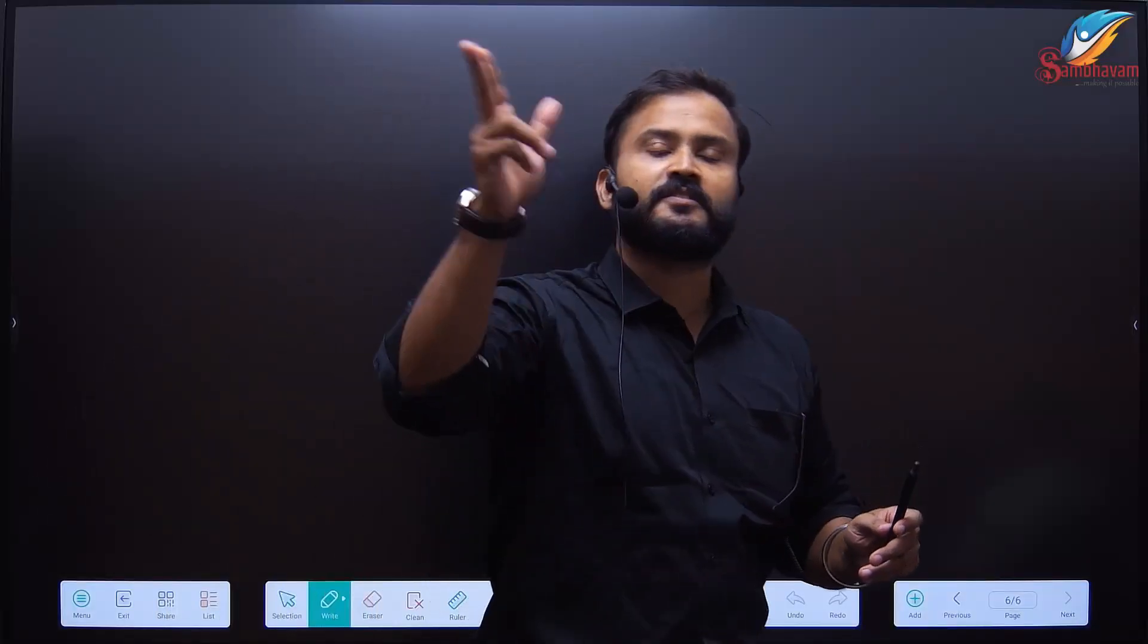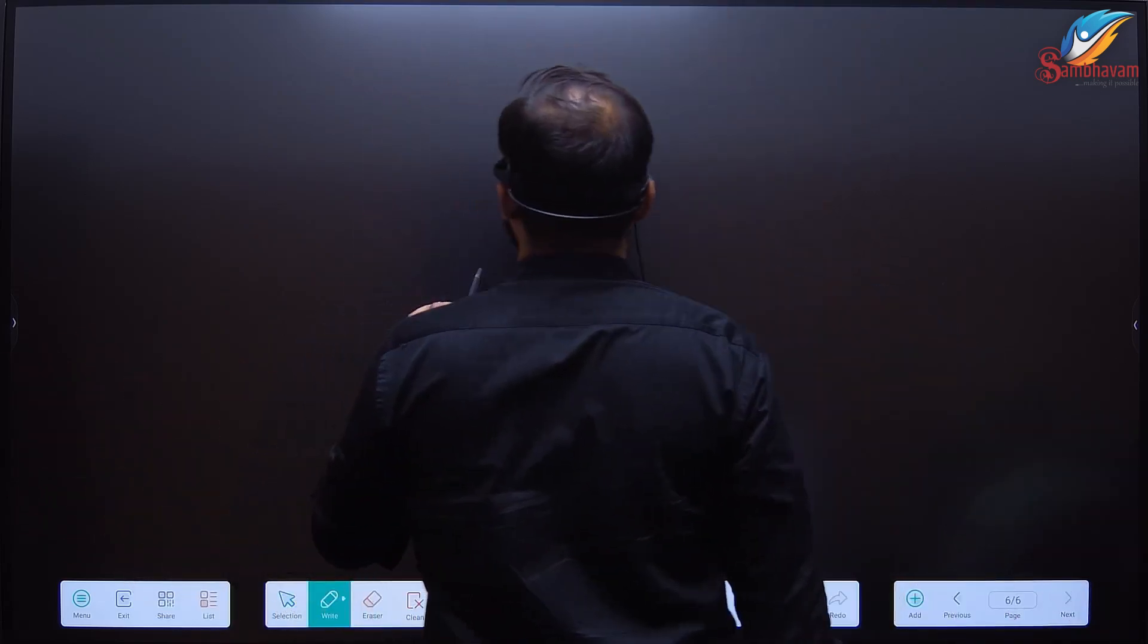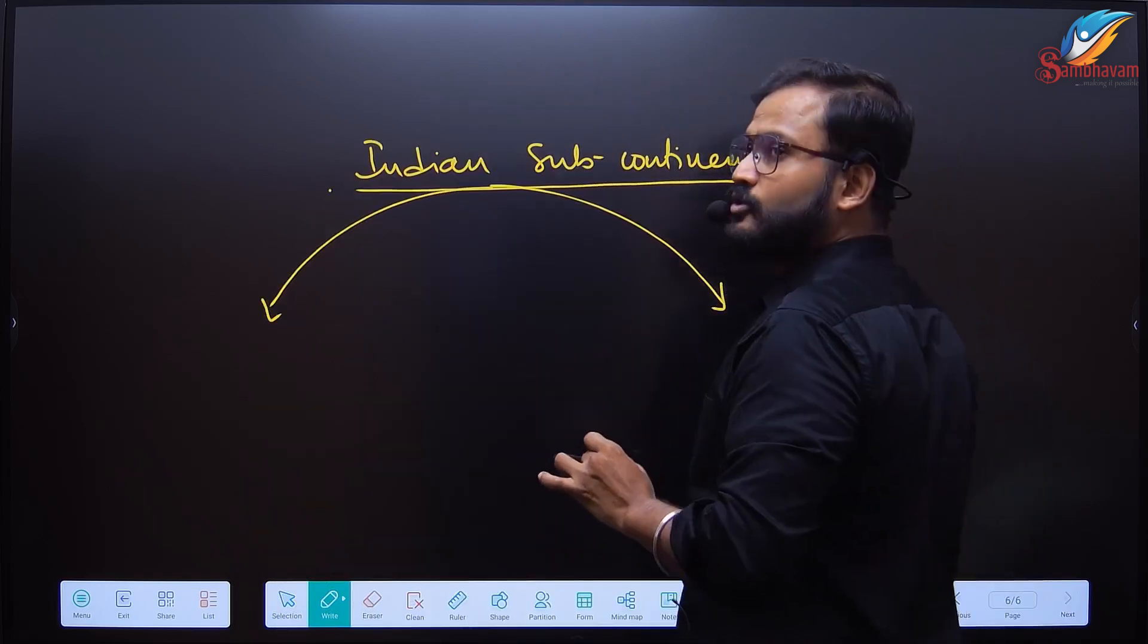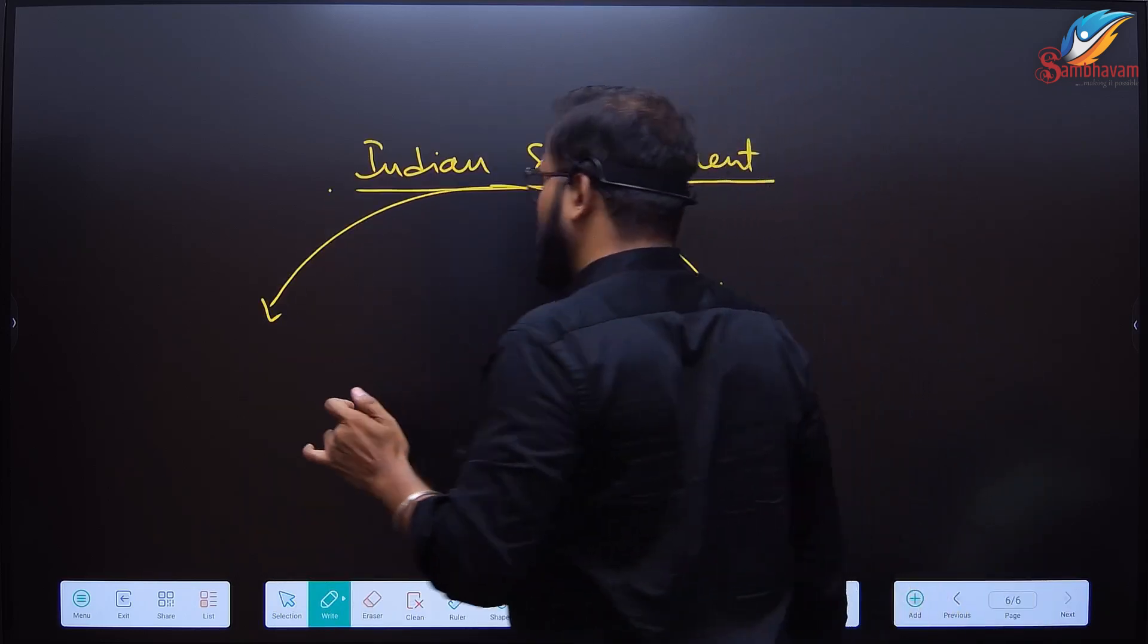On the basis of the Government of India Act of 1858, I will explain certain topics. If I talk about the Indian subcontinent, it should be understood in two segments: one is the British provinces and the other is the princely states.